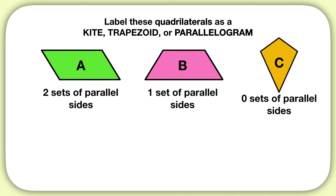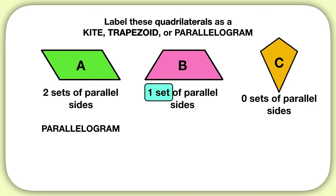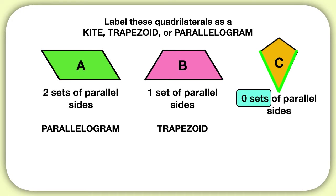Now that we've decided how many sets of parallel sides each shape has, we can start naming them. When a shape has two sets of parallel sides, it is called a parallelogram. If a shape has only one set of parallel sides, it's called a trapezoid. When a shape has zero sets of parallel sides, we have to ask ourselves a second question — we start looking at the side lengths. We can see in shape C that these two sides are the same length, and these two sides are also the same length, so shape C has two sets of equal length sides. If a shape has both zero sets of parallel sides and two sets of equal length sides, then it is a kite.